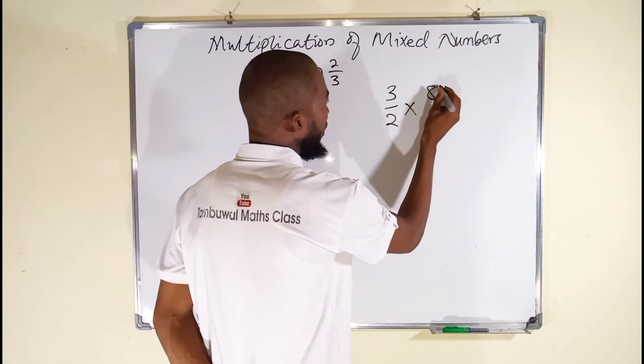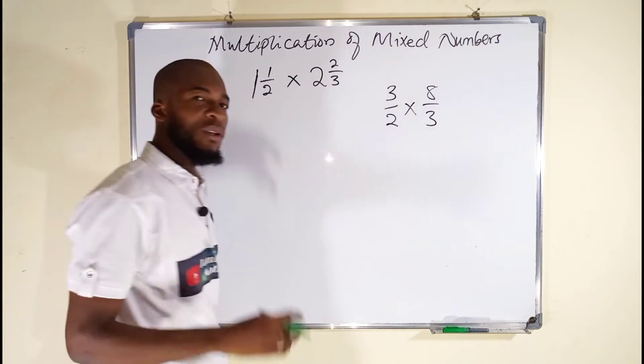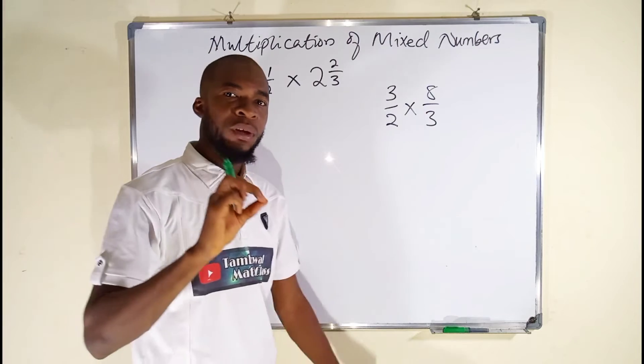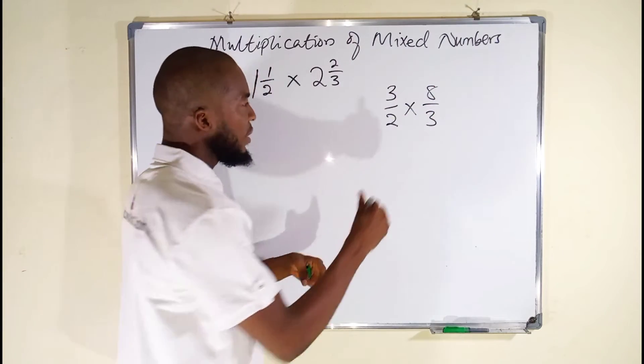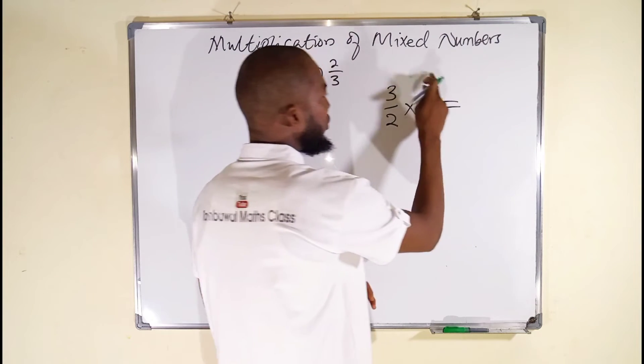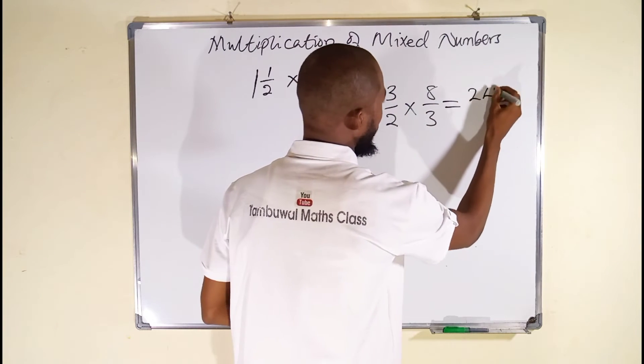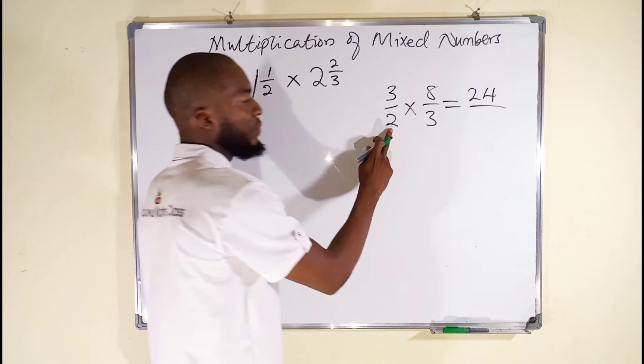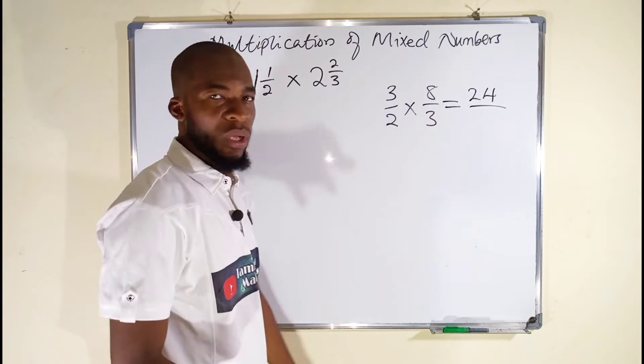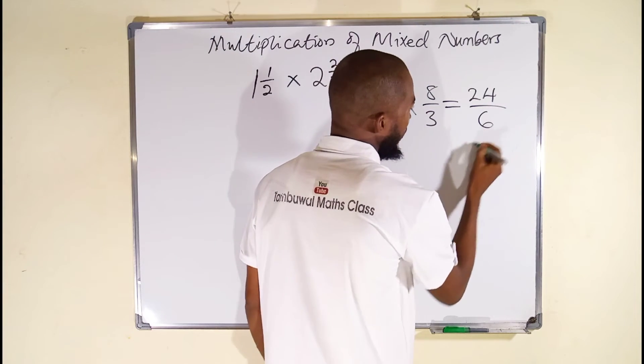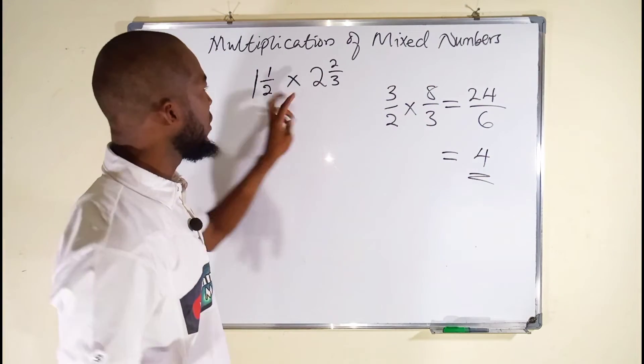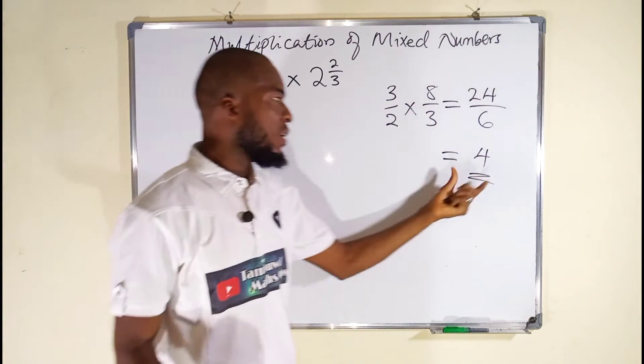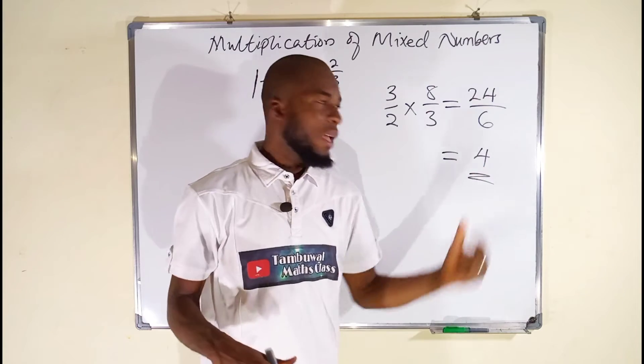Whenever you have two fractions multiplying one another, multiply the numerator separately and denominator separately. And this becomes 3 times 8 is 24, and 3 times 2 is 6, and this finally equals 4. So by multiplying these two mixed numbers together, you definitely have to obtain this 4.